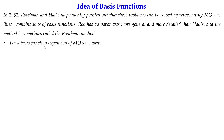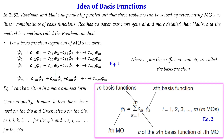In 1951, Roothaan and Hall independently pointed out these problems and proposed a solution: representing MOs as linear combinations of basis functions. Roothaan's paper was more general and detailed than Hall's, and the method is sometimes called the Roothaan method. For the basis function expansion of MOs, one molecular orbital can be expressed as a linear combination of basis functions φ_1, φ_2, φ_3, ... φ_m, where c_11, c_21, c_31 are the coefficients and the φ's are called the basis functions.